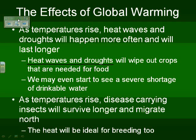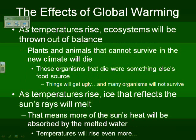As temperature also rises, there are going to be disease-carrying insects that are going to be able to survive longer and migrate to different places. The heat will be ideal for them. Ecosystems are going to be thrown out of balance — as plants and animals die, those organisms that survive off of them are going to be altered, and it's going to throw off a whole population shift, so you're going to have a lot of this balance being disrupted.